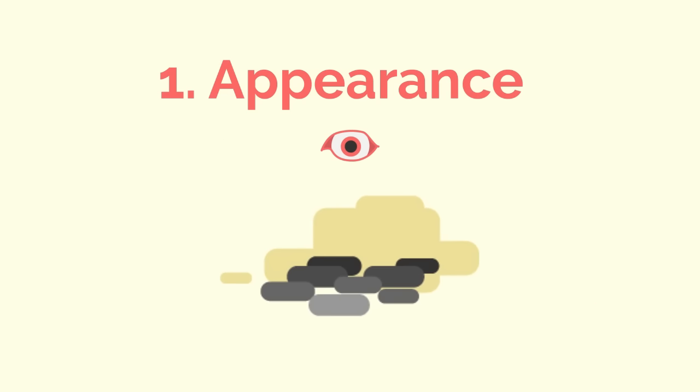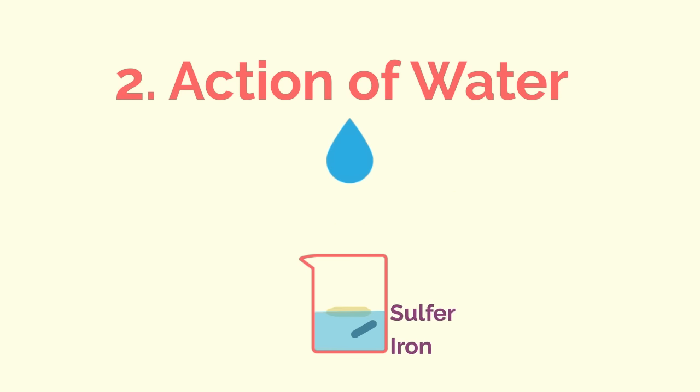In the mixture, we can clearly see the dark grey crystals of iron and the bright yellow powder of sulphur. We can see that the iron in the mixture still sinks and the sulphur floats. The components of the mixture have separated.